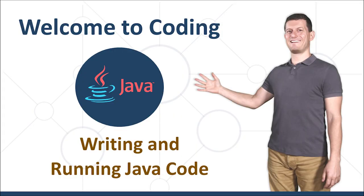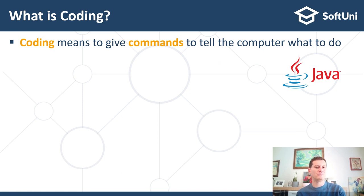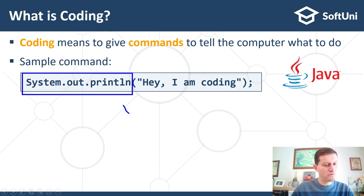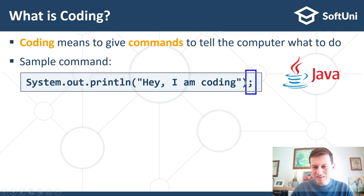Welcome to coding. In this section I will explain what coding is and how to write simple commands in Java. Together we will write and execute a few small Java programs. So what is coding? Coding means giving commands to tell the computer what to do. This is an example of a command in the Java language — it consists of System.out.println with a value in brackets and quotes. These commands consist of something which tells what to do and some parameters which tell details about the command, and the command ends with a semicolon.